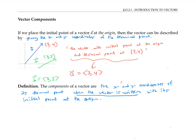Vectors can also be drawn in three-dimensional space as well as in a two-dimensional plane. In this case, the components of the vector in 3D are the x, y, and z coordinates of the terminal point of the vector when its initial point is at the origin in three-space.